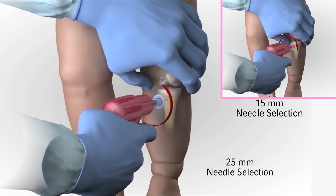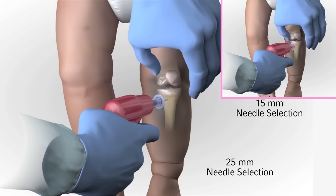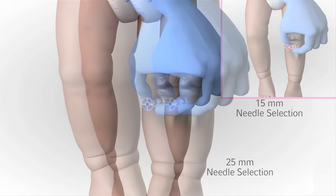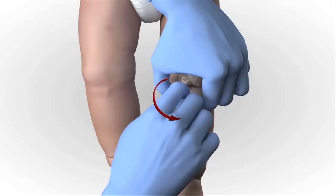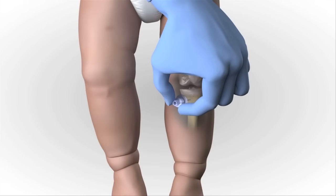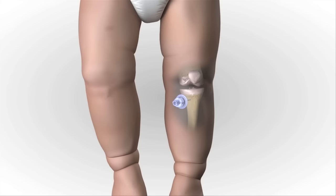Gently drill. Immediately release the trigger when you feel the pop or give as the needle set enters the medullary space. Avoid recoil — do not pull back on the driver when releasing the trigger. Hold the hub in place and pull the driver straight off. Continue to hold the hub while twisting the stylet off the hub with counterclockwise rotations. The catheter should feel firmly seated in the bone.